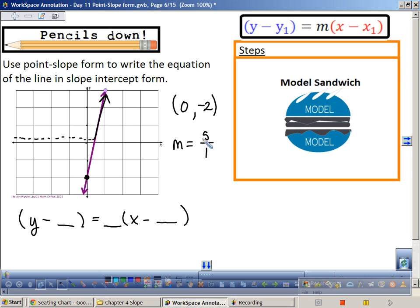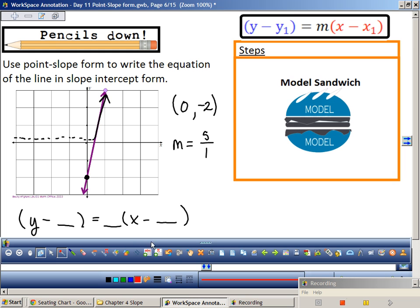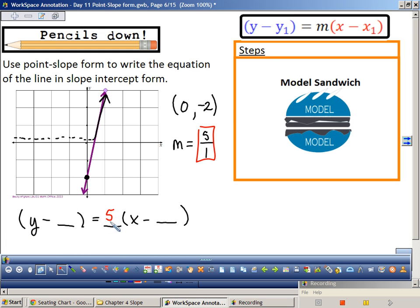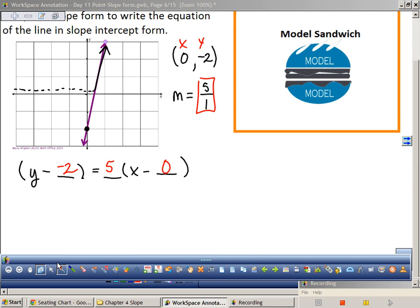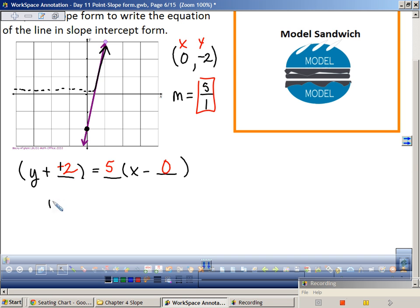Now that we have our point and our slope, we can now use point slope form where my slope is five. And here's my X value. Where does the X value go? Next to the X. The X's go together and the Y's go together. Now I just have to simplify and solve. Let's simplify together. What is the opposite of negative two? Positive two. So I have y plus two equals five times x is five x. Do I have to write five times zero? Just leave it.